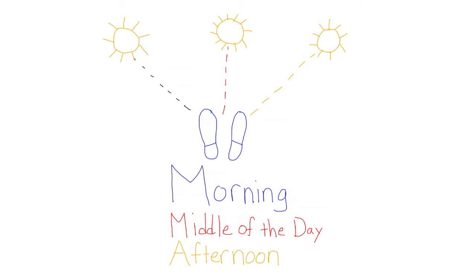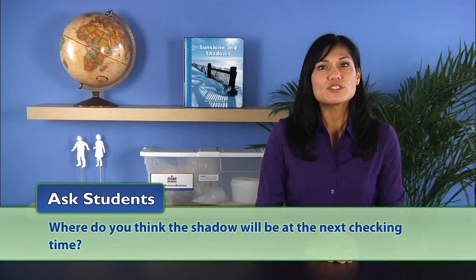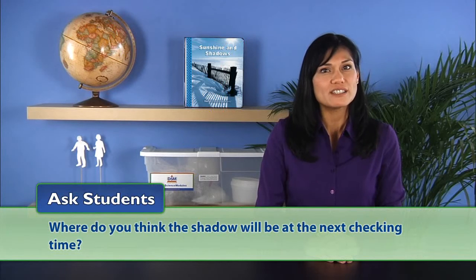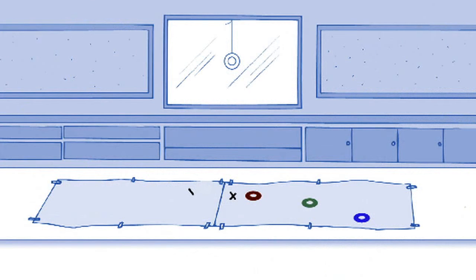To conclude session one, ask students, where do you think the shadow will be at the next checking time? Accept all ideas and have the students make a small x on the paper where they think the shadow will be later.